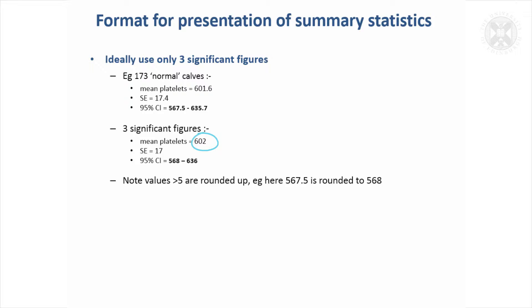And that's what I've done down here, and usually you want to put the mean and the standard error to the same number of significant figures, so I've only put standard error as 17 and rounded the confidence interval. So note that if you've got decimal points or values of five or more, the convention is to round upwards.